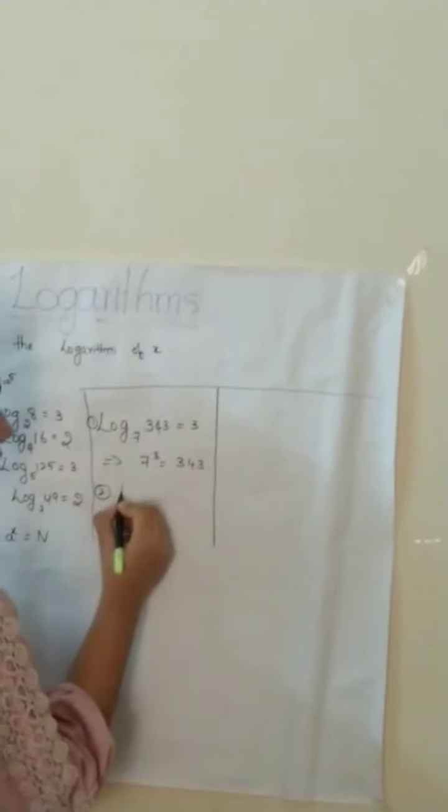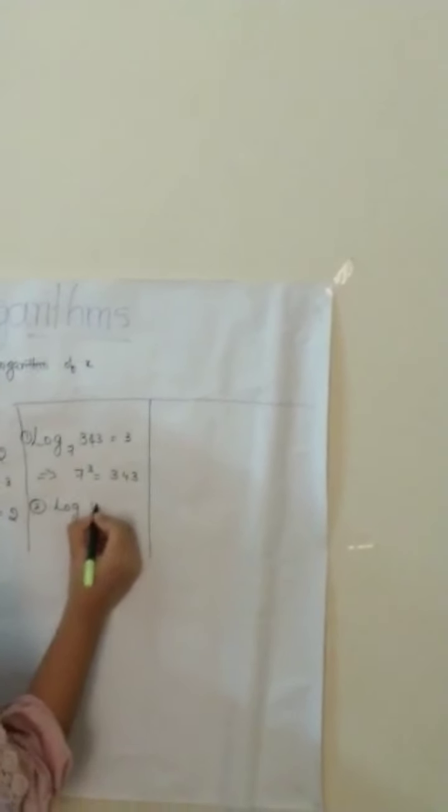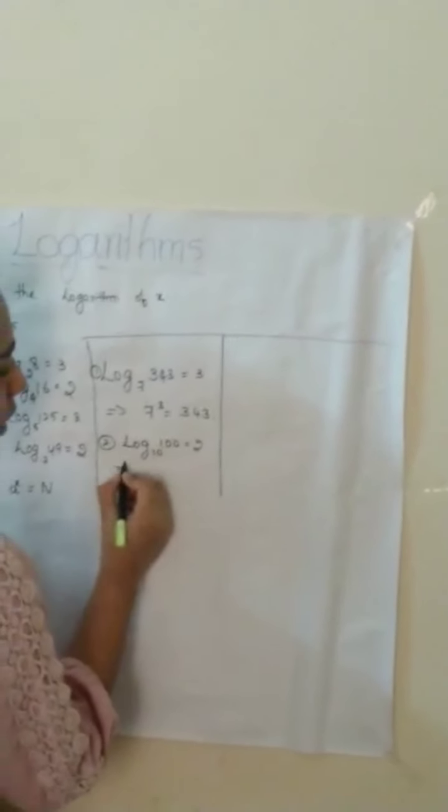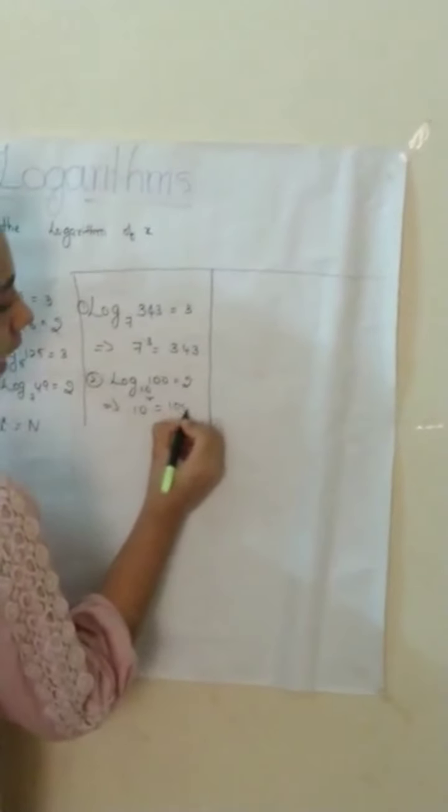Second one: log 100 base 10 equals 2 implies 10 square equals 100.